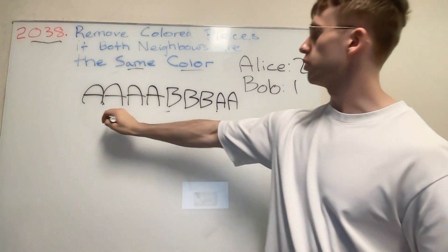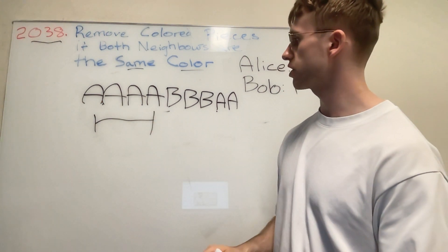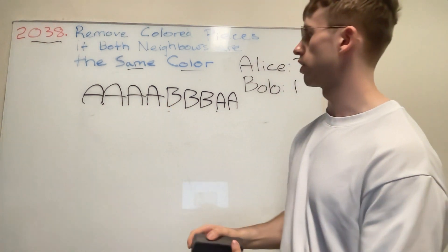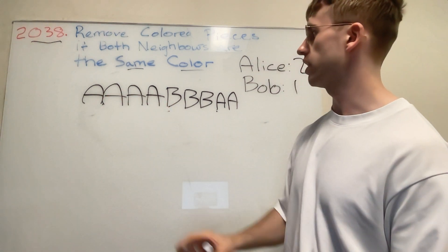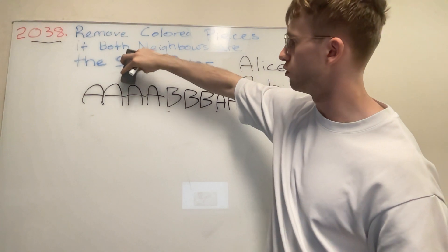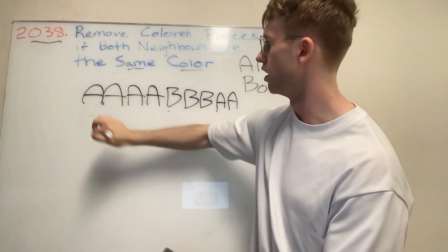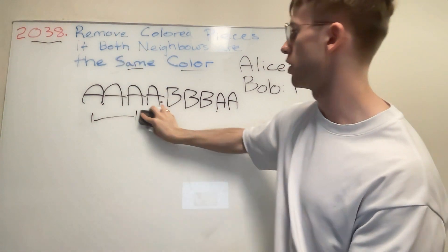So what we see here is that Alice basically got two points, and that's because how this would work is if Alice plays, they could remove one of these middle points. Say it's initially here, we remove the middle one.